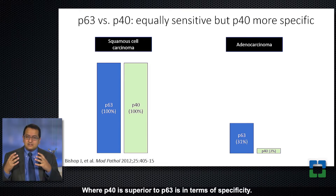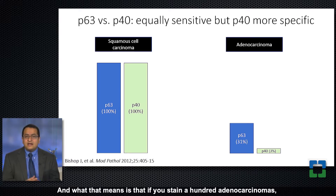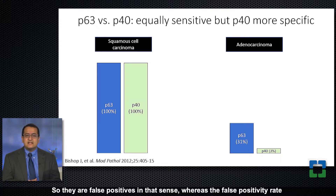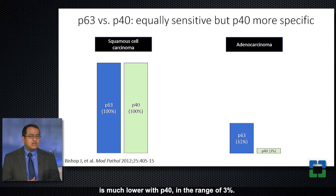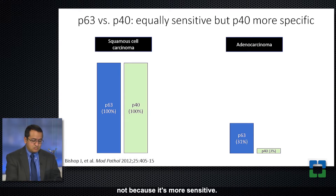Where p40 is superior to p63 is in terms of specificity. If you stain a hundred adenocarcinomas, 31 percent of them will stain with p63 — false positives in that sense — whereas the false positivity rate is much lower with p40, in the range of 3 percent. To summarize: p40 is a better marker because it's more specific than p63, not because it's more sensitive.